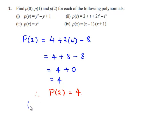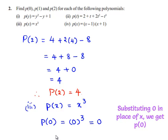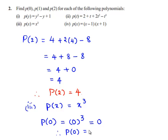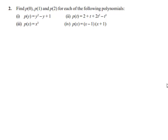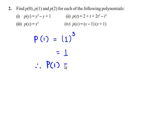Moving on to the third polynomial, p of x is equal to x cube. Let us first find p of 0. This is obtained by substituting 0 in place of x, which is 0 cube, which is 0. Then p of 1 is equal to 1 cube. 1 cube is 1, therefore p of 1 is equal to 1.